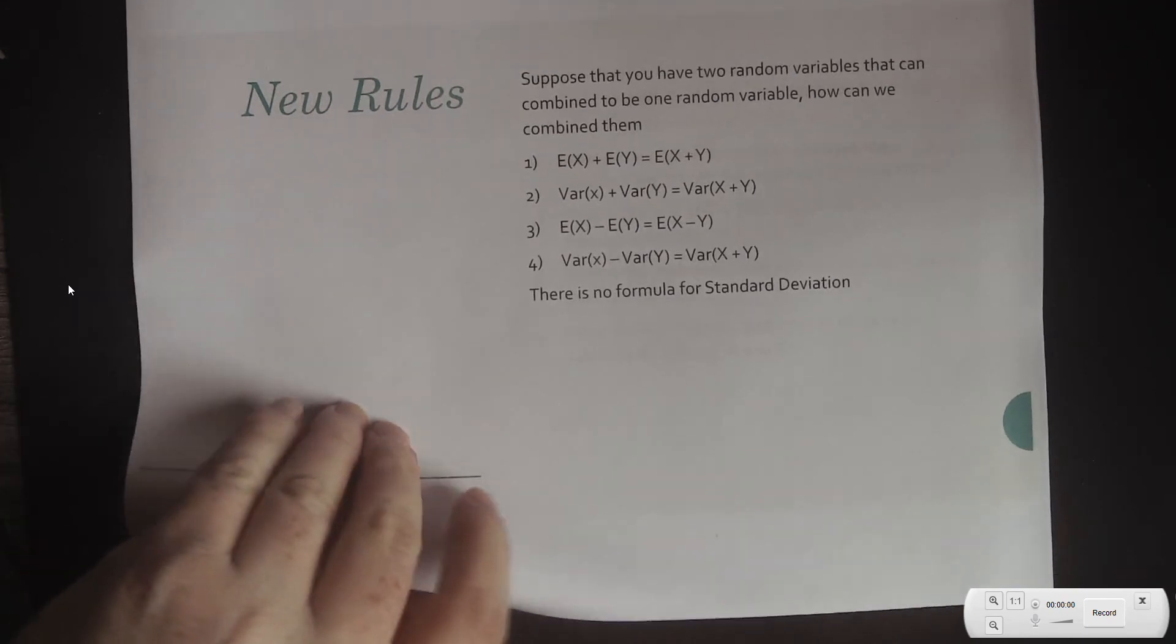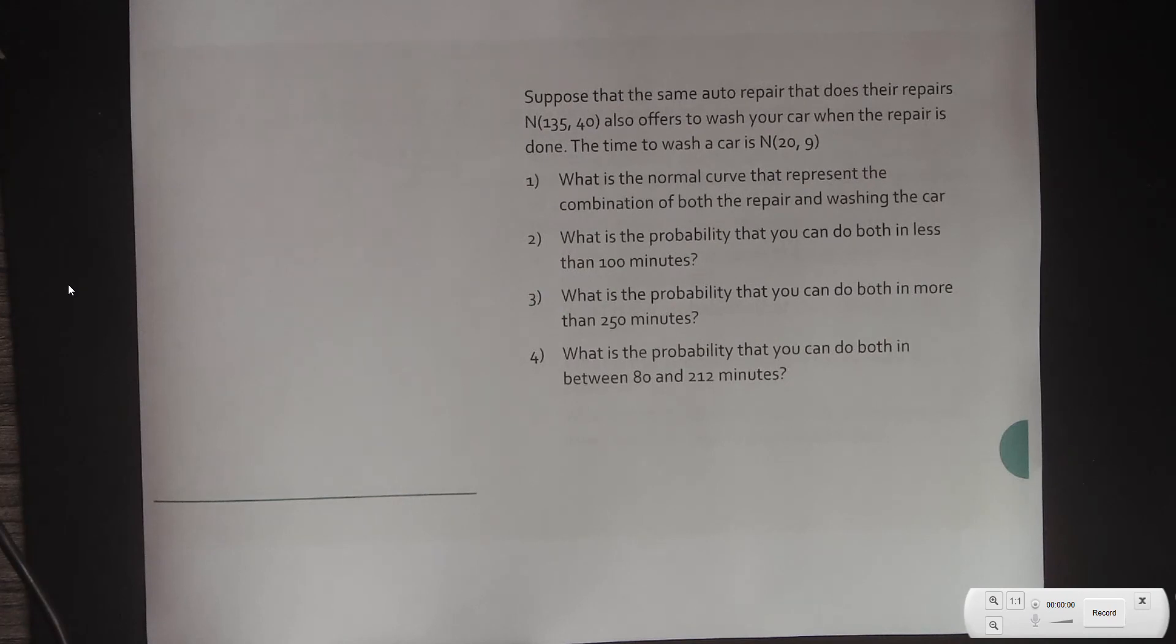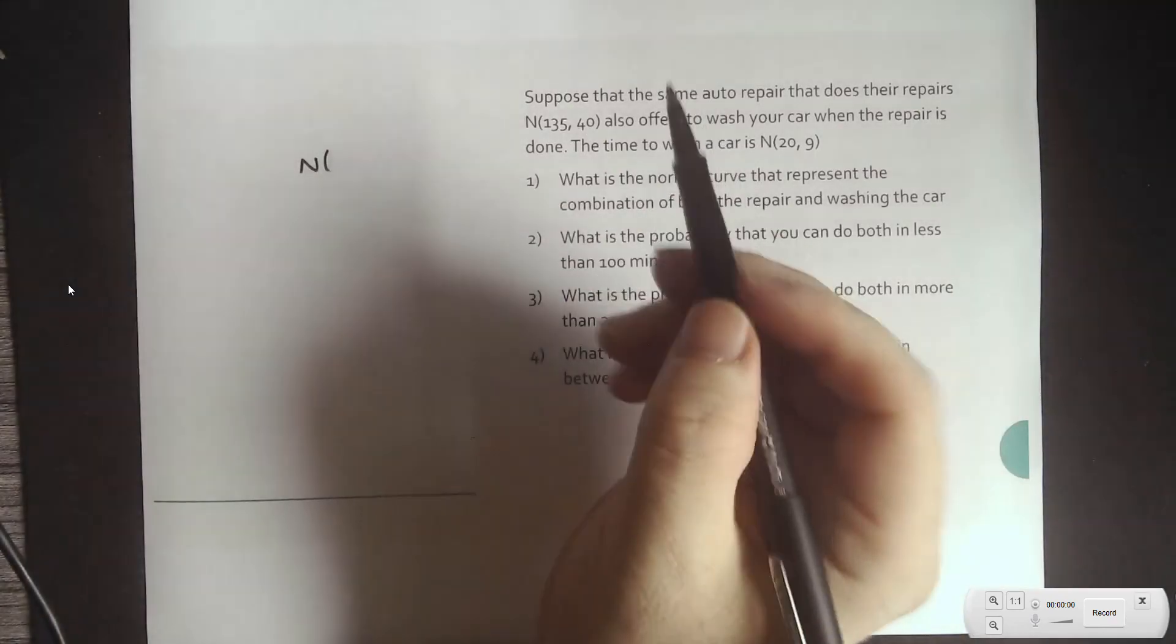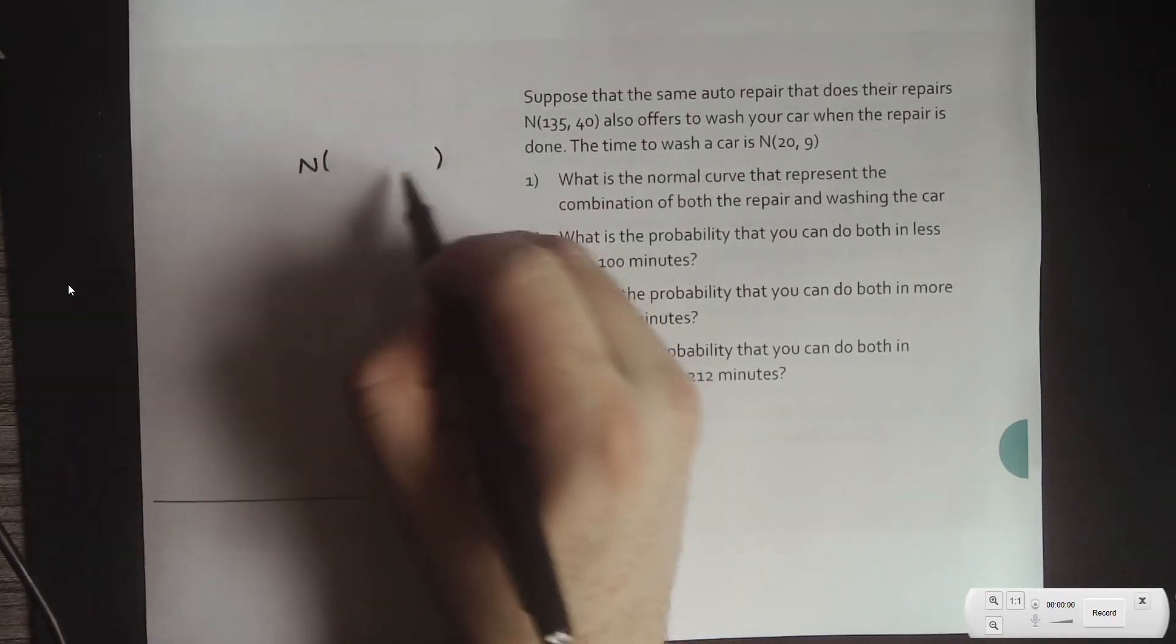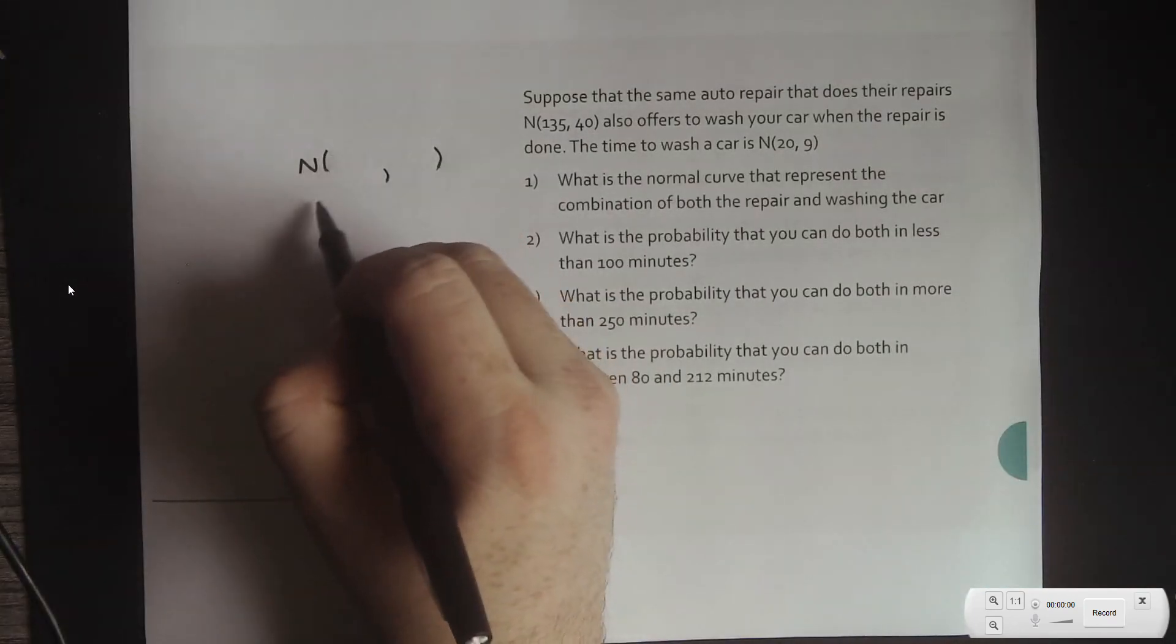Let's take a look at this real fast. Suppose that the same auto repair that does the repairs N-135-40 also offers to wash your car when the repair is done. The time to wash your car is N-29. What is the normal curve that represents a combination of both, the repair and washing of the car? So, we need a normal curve with a new expected value and a new standard deviation, expected value being the average.